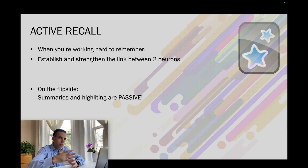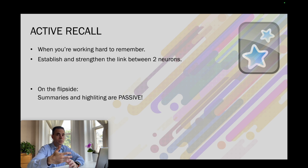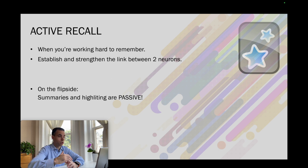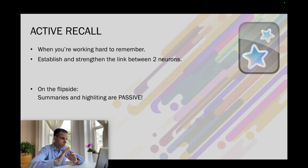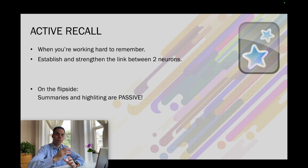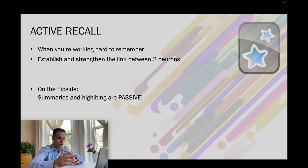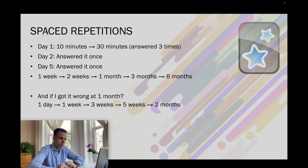When two neurons work together, the stronger the connection becomes between them, and this is the basis of any kind of learning. In contrast, when you engage in passive ways of studying — such as preparing summaries, reading summaries, or highlighting passages — these are all passive ways of learning, and passive learning will never be as effective as active recall.